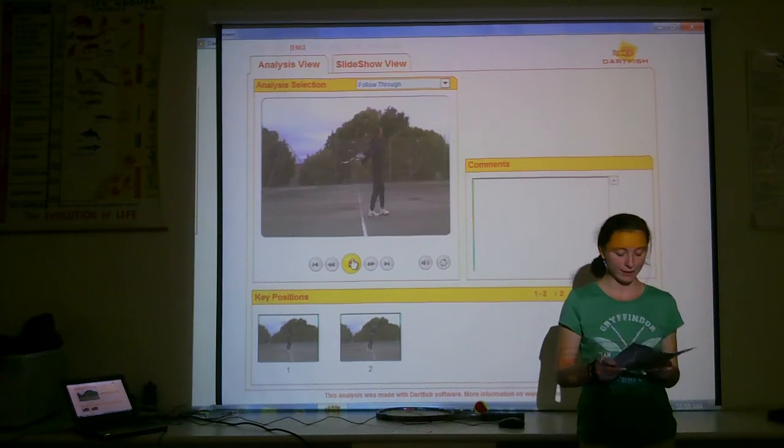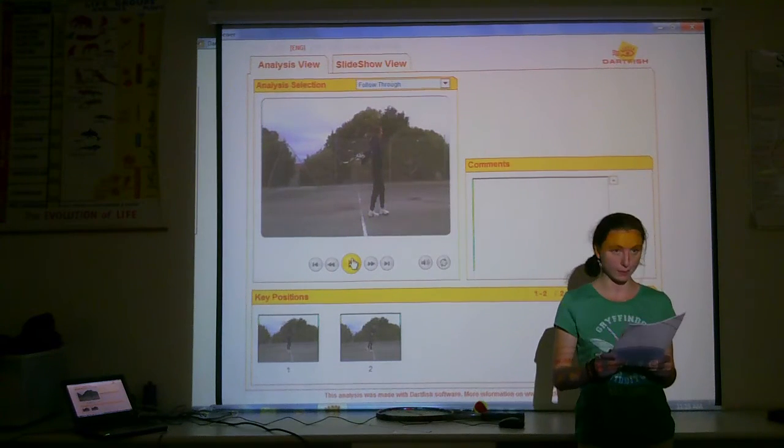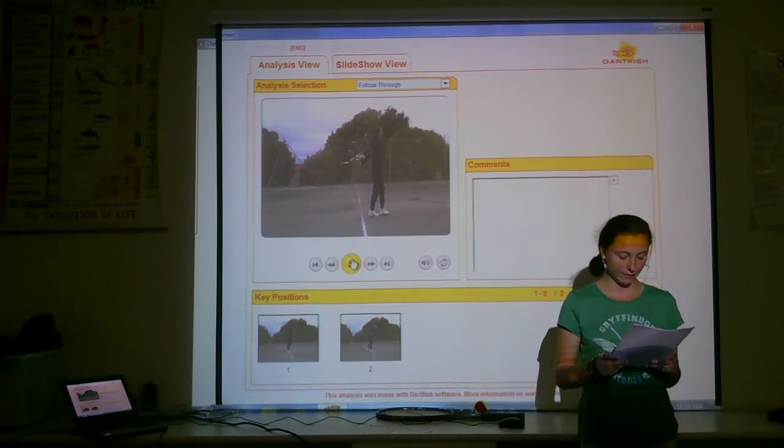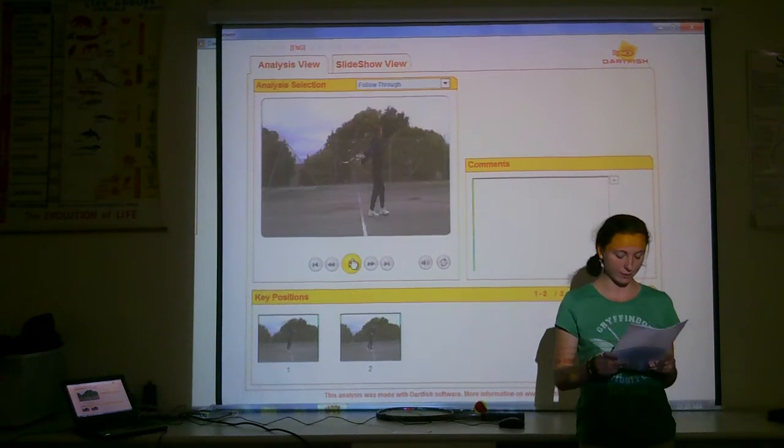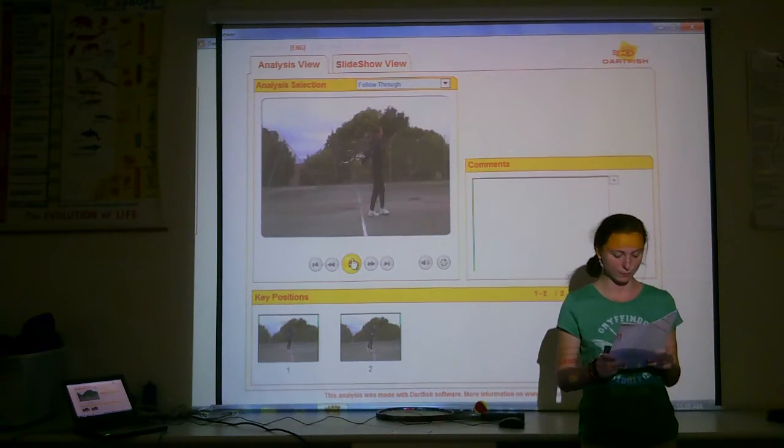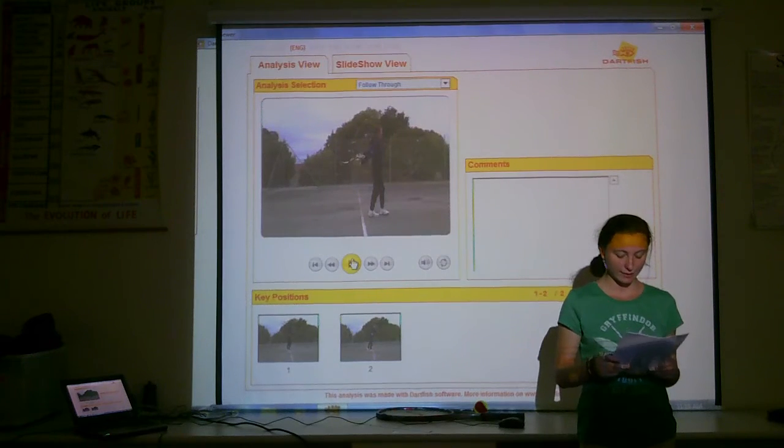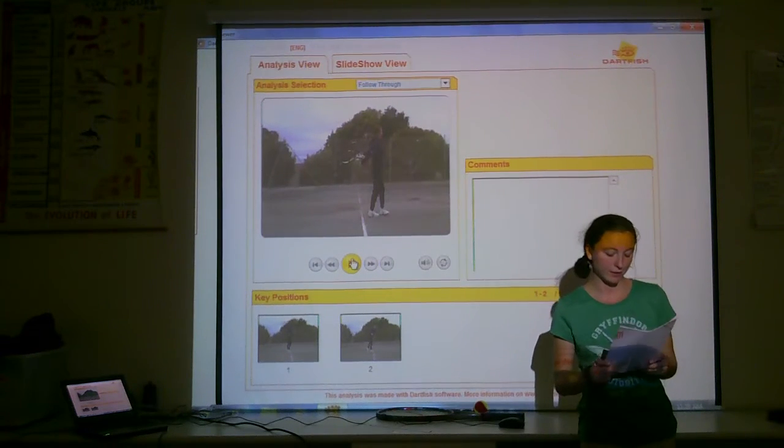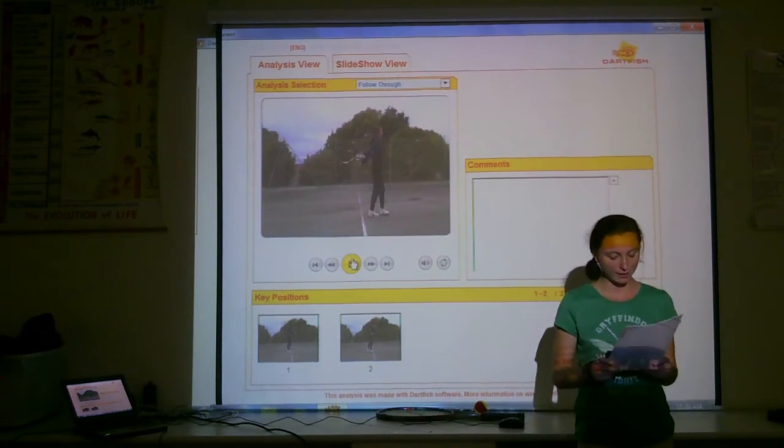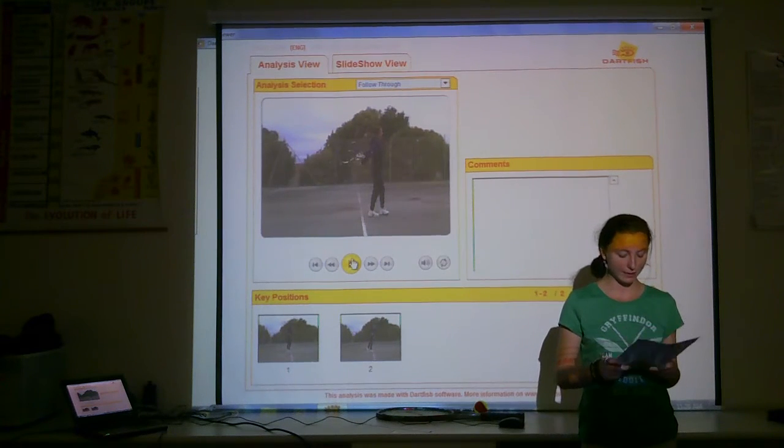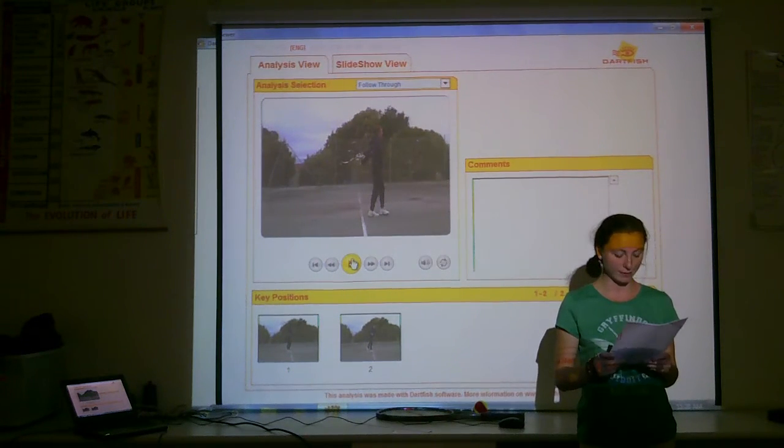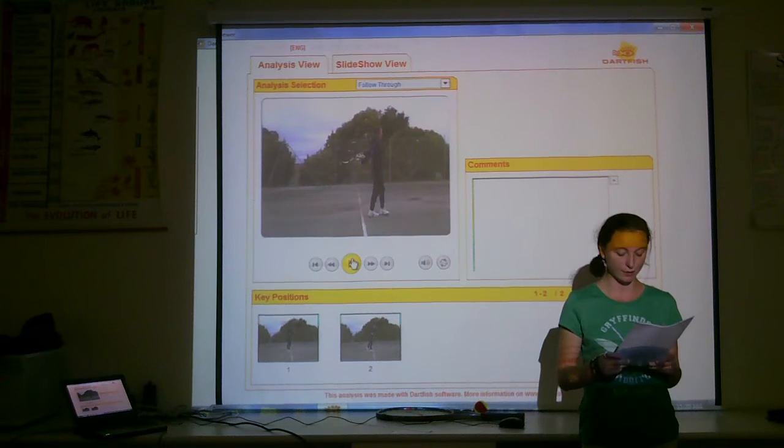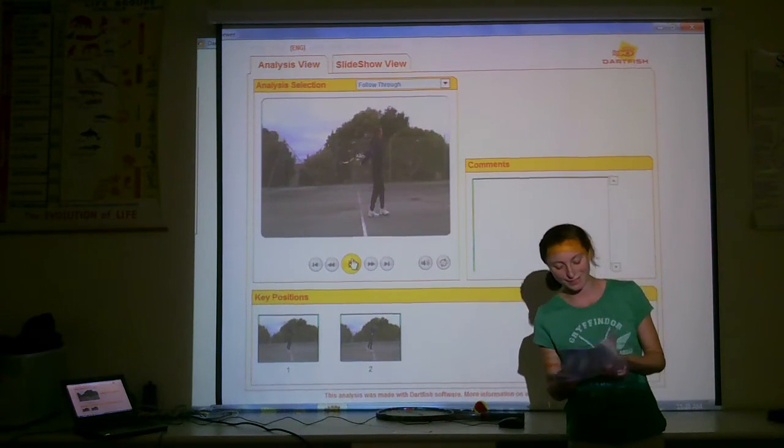When the racket head finally comes in contact with the tennis ball, various things happen. First is the impact forces caused by the angle at which the tennis racket hits the tennis ball. The individual hits the ball at a 2 o'clock position, applying a weak topspin. This topspin will affect how the ball rebounds on the other side of the net and influence the stroke of the receiver.